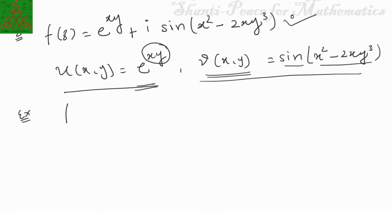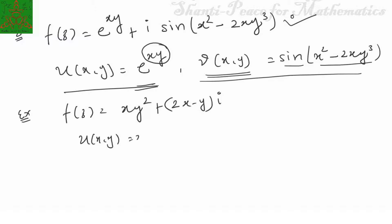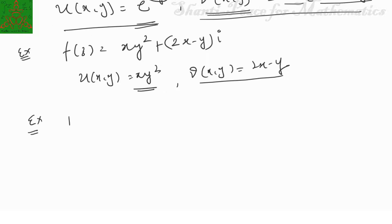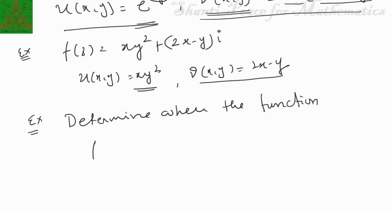Another example: f(z) = xy² + i(2x − y). Here u(x,y) = xy² is a polynomial in x and y, so it is continuous. And v(x,y) = 2x − y is also a continuous polynomial function. Therefore this function f is continuous over the entire complex plane.